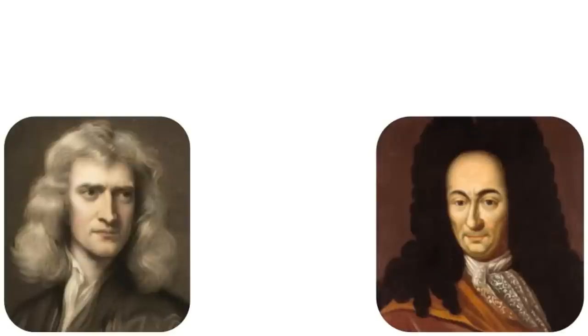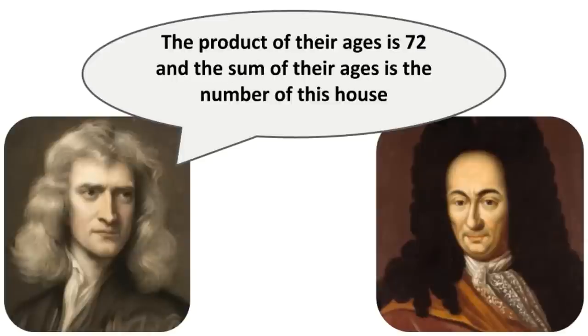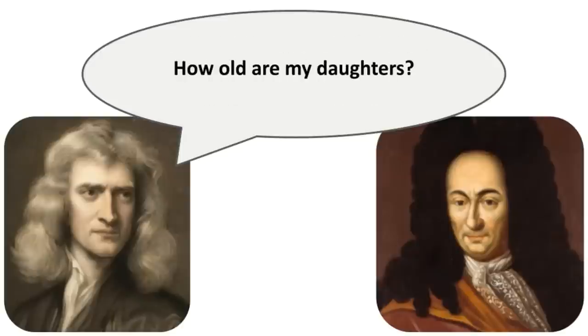Two mathematicians are having lunch together. One of them says to the other one, I've got three daughters. The product of their ages is 72, and the sum of their ages is the number of this house. How old are my three daughters?